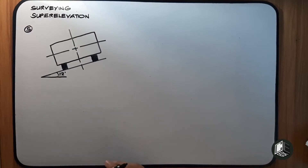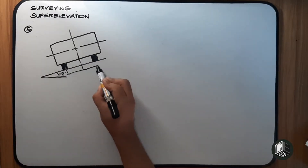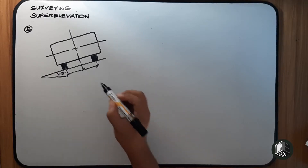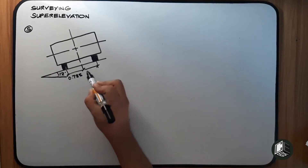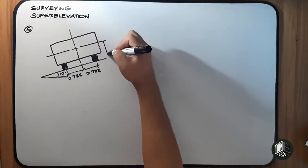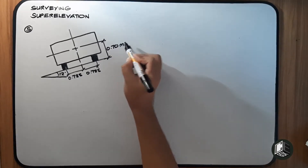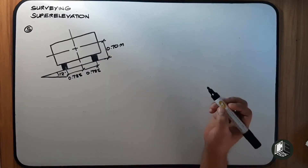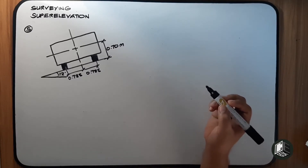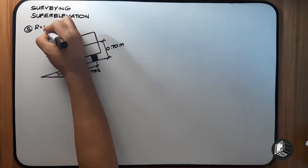The super elevation angle is 12 degrees. The tread is 1.45 meters — that is the distance between the wheels — so we divide that by two, giving us 0.725 meters on each side. The center of gravity measured from the road is 0.70 meters.